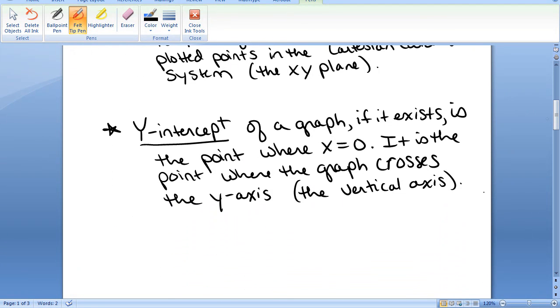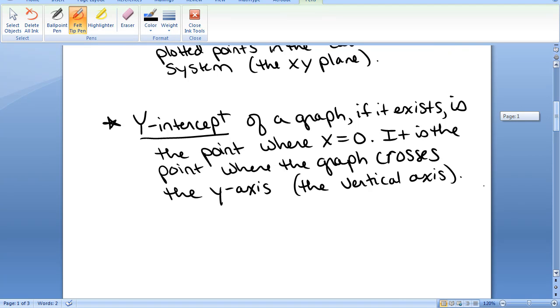The y-intercept of a graph, if it exists, is the point on the graph where the x value is 0. It's the point on the graph where the graph crosses the y-axis, the vertical axis.